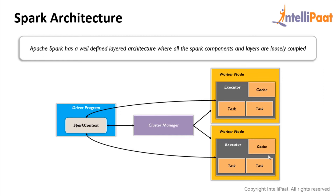The Spark driver and Spark context take care of job execution within the cluster. Spark context works with the cluster manager to manage various jobs. The cluster manager is responsible for acquiring resources on the Spark cluster and allocating them to a Spark job. This job is then split into multiple tasks which are distributed over the worker nodes. When an RDD is created in Spark context, it can be distributed across various nodes and cached there. Worker nodes are the slave nodes whose job is to execute tasks and return results back to the Spark context.